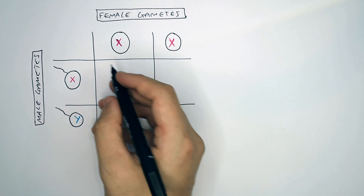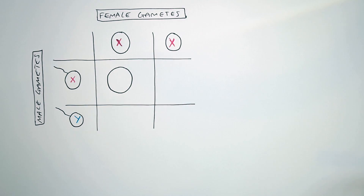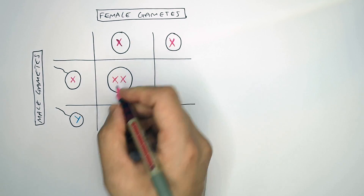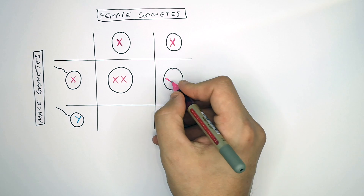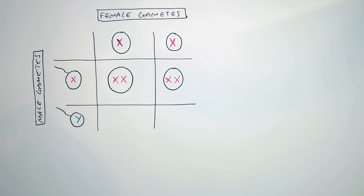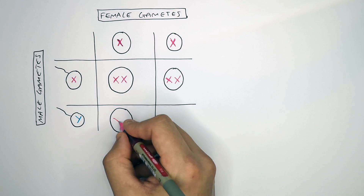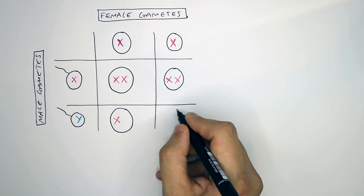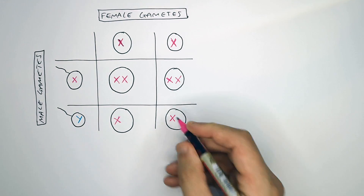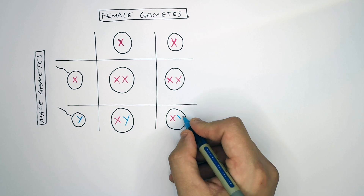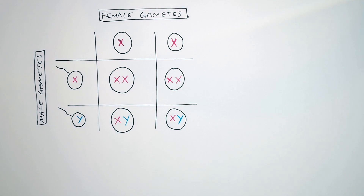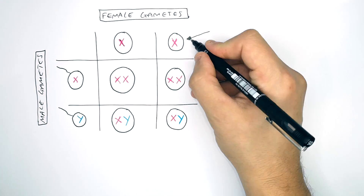So now we'll do the cross. This is a zygote which has got XX, and this is a zygote which has also got XX — these will be female zygotes. The female will always give the X chromosome no matter what. The male, if it gives the Y, means that zygote will be a male zygote.